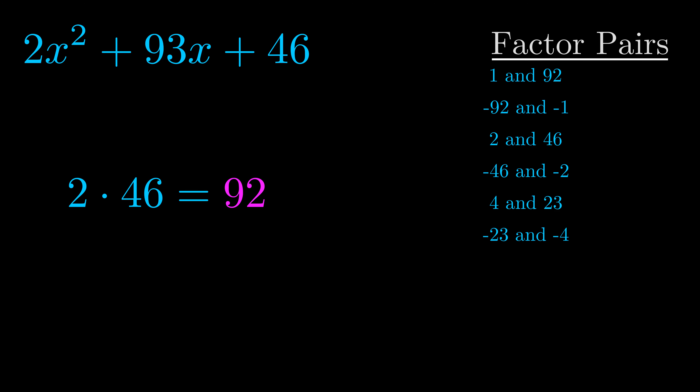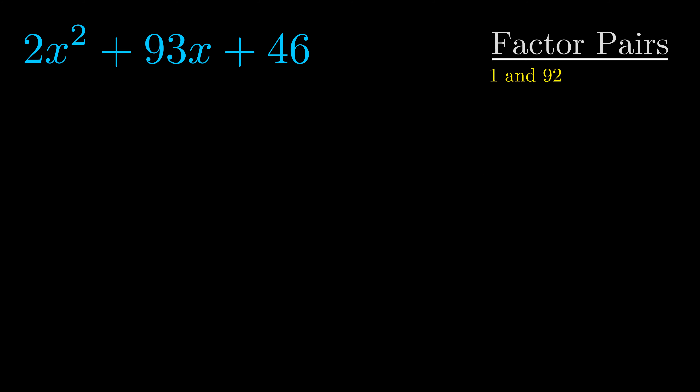Step two is to try to find all of the pairs which multiply to this number. You don't really need to find all of them, but go ahead and write down as many numbers as you can that multiply to the magenta value. Pause the video and resume when you're ready to continue.